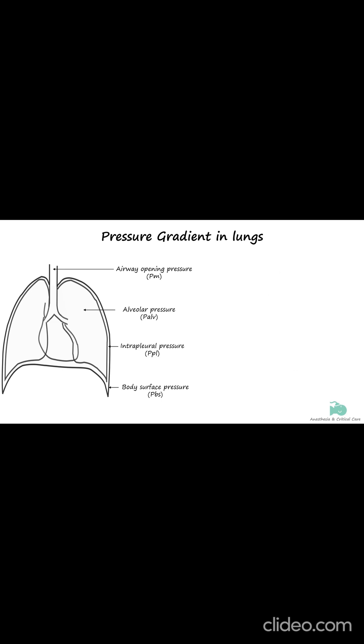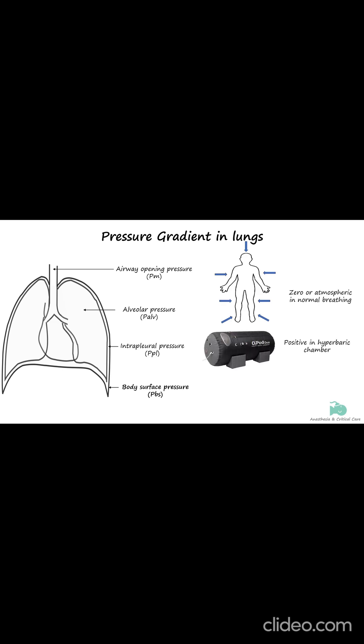Body surface pressure is the pressure exerted at the body surface. This is equal to zero unless the patient is using a pressurized chamber like a hyperbaric chamber or negative pressure ventilator like an iron lung.